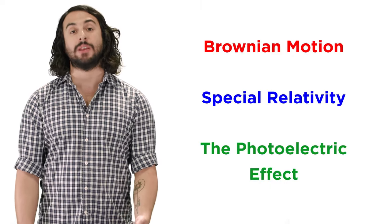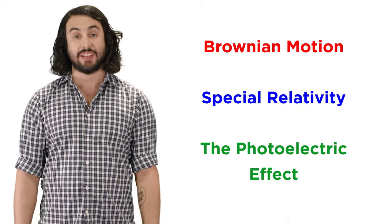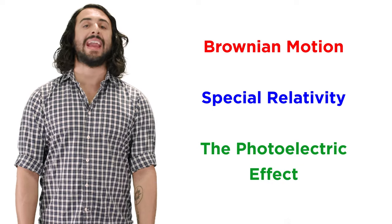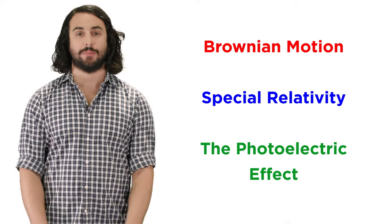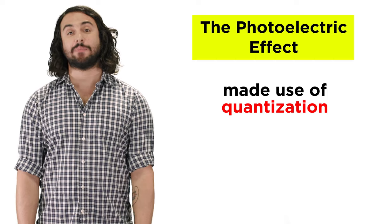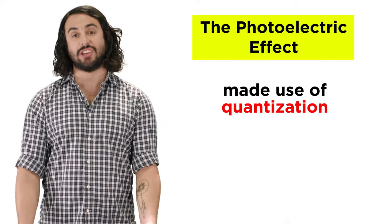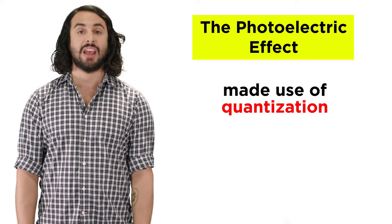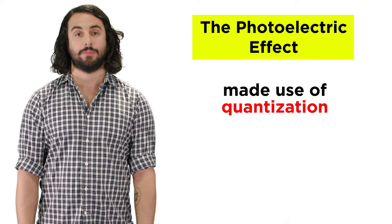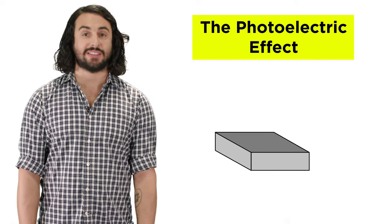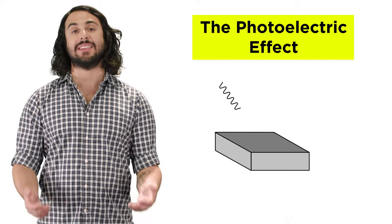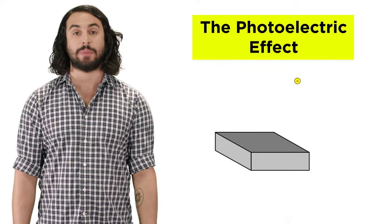These were about Brownian motion, special relativity, which we will get to later, and the photoelectric effect. The last of these, just like Planck's work, also made use of quantization, which cemented the concept as more than just a fluke. The photoelectric effect has to do with the way light is able to eject an electron from a piece of metal.